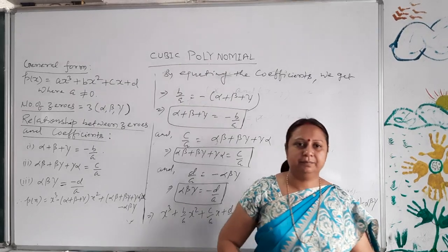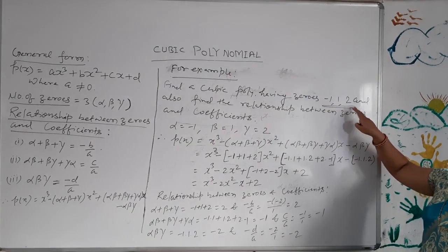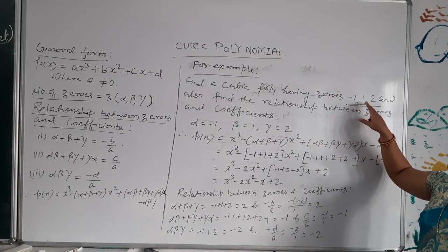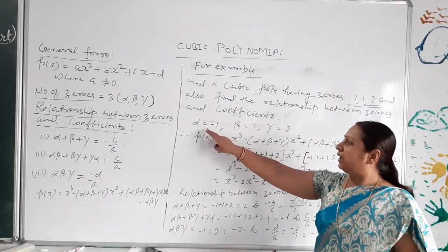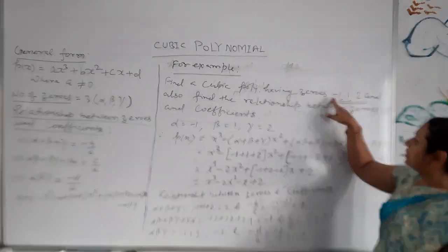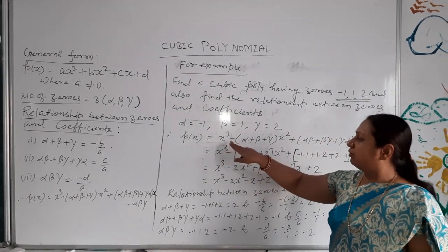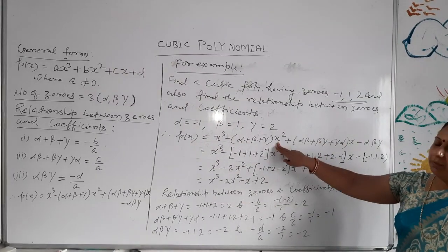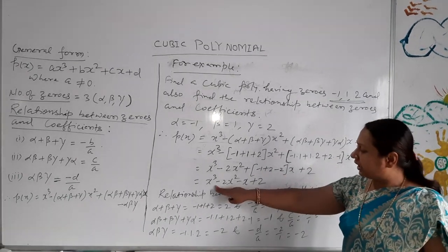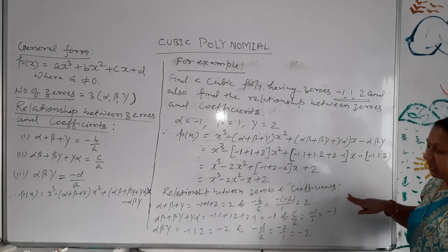Let us take an example: find the cubic polynomial having zeros −1, 1, and 2, and also verify the relationship between zeros and coefficients. Here alpha = −1, beta = 1, and gamma = 2. Using the formula p(x) = x³ − (alpha + beta + gamma)x² + (alpha·beta + beta·gamma + gamma·alpha)x − alpha·beta·gamma, after substituting and solving, we get p(x) = x³ − 2x² − x + 2.